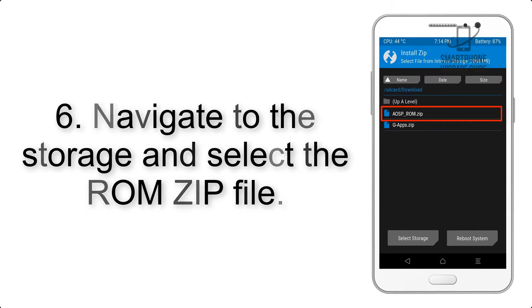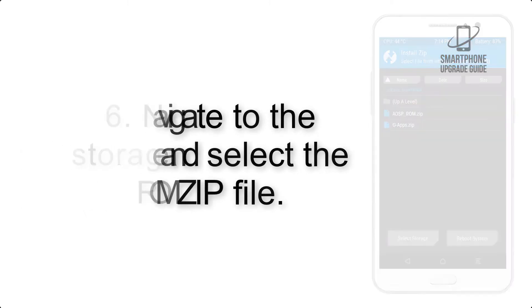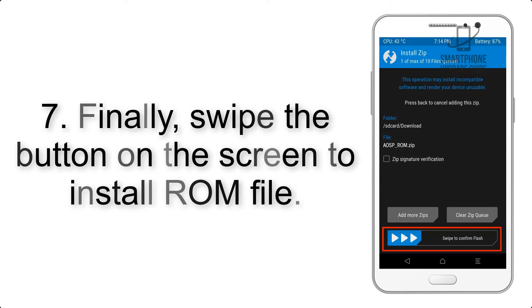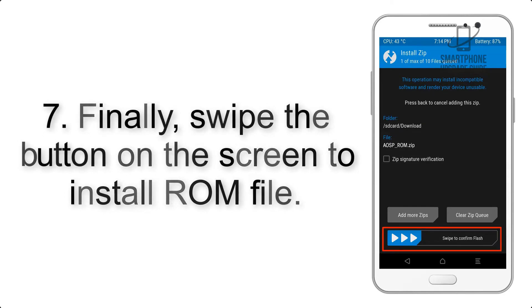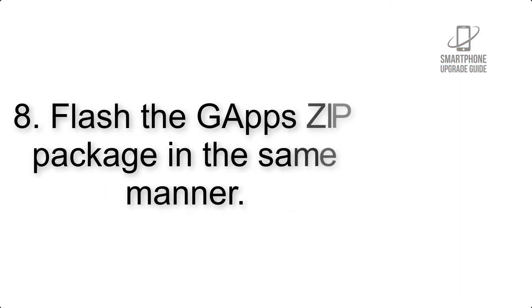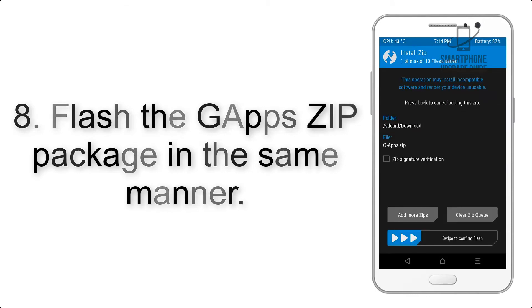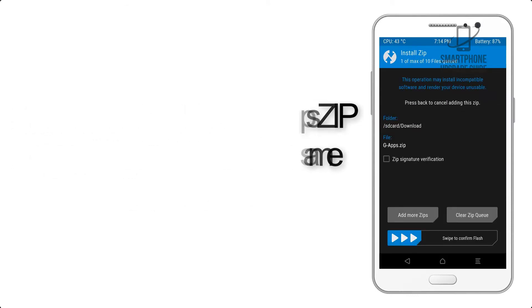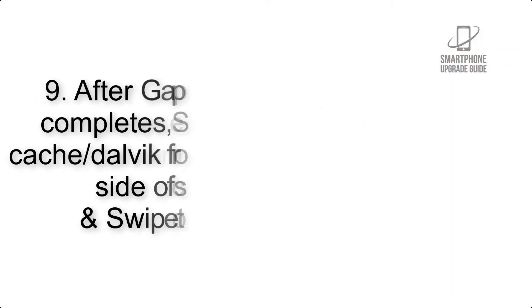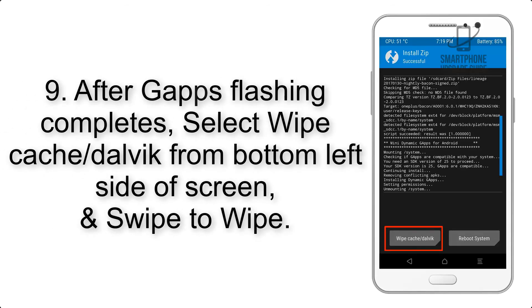Step 6: Navigate to the storage and select the ROM zip file. Step 7: Swipe the button on the screen to install the ROM file. Step 8: Flash the GApps zip package in the same manner. Step 9: After GApps flashing completes,